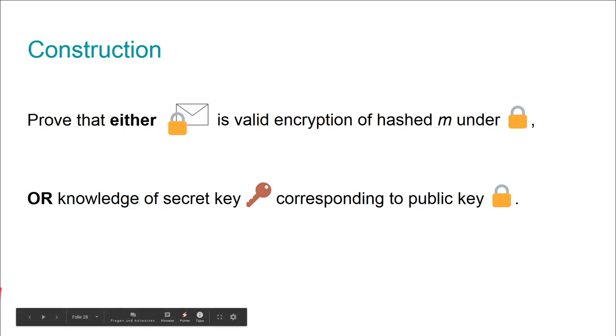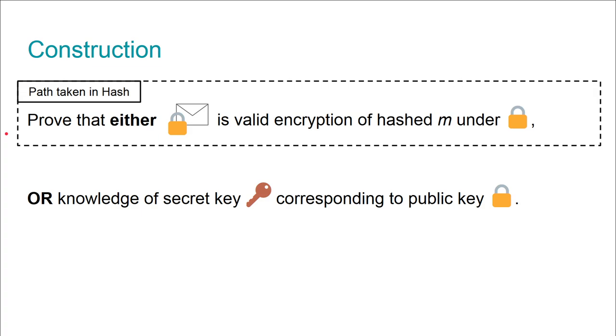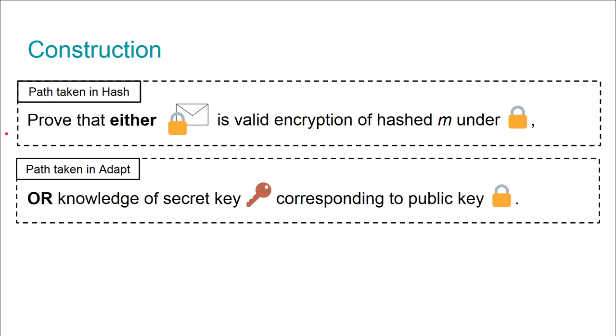Let's go to the construction. How do we actually construct a chameleon hash which is fully collision-resistant? From a high level, we have an OR proof which proves either that a hash is an encryption of the message, or I know that a secret key to some public key is known. At hashing, you encrypt your message you want to hash with fresh random coins and prove that you know the randomness used to encrypt it. The other path in the OR proof is, once you want to adapt things, you no longer care what's in the ciphertext but prove knowledge of the secret key to the encryption public key. Checking the validity of the hash is simply verifying the proof.